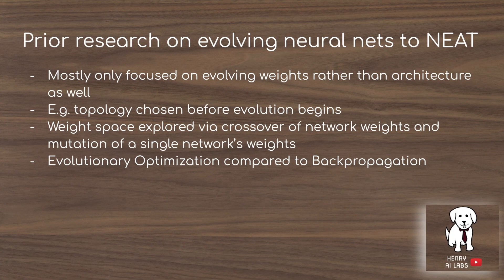Prior research to the NEAT algorithm mostly focused on evolving just the weights rather than the architecture as well. The topology or architecture of the network would be chosen before the evolutionary algorithm began, and then the weight space would be explored by crossover of network weights and mutation of a single network's weights. Backpropagation takes the partial derivative with respect to every parameter, whereas evolutionary optimization doesn't use partial derivatives — it just mutates parameters and uses a fitness function and usually crossover as well.